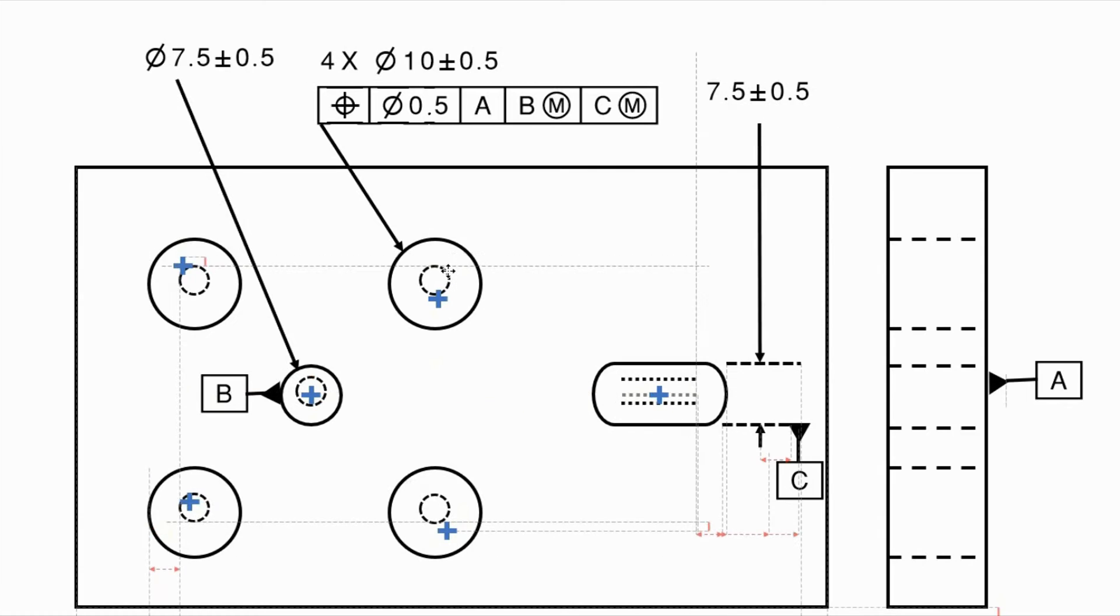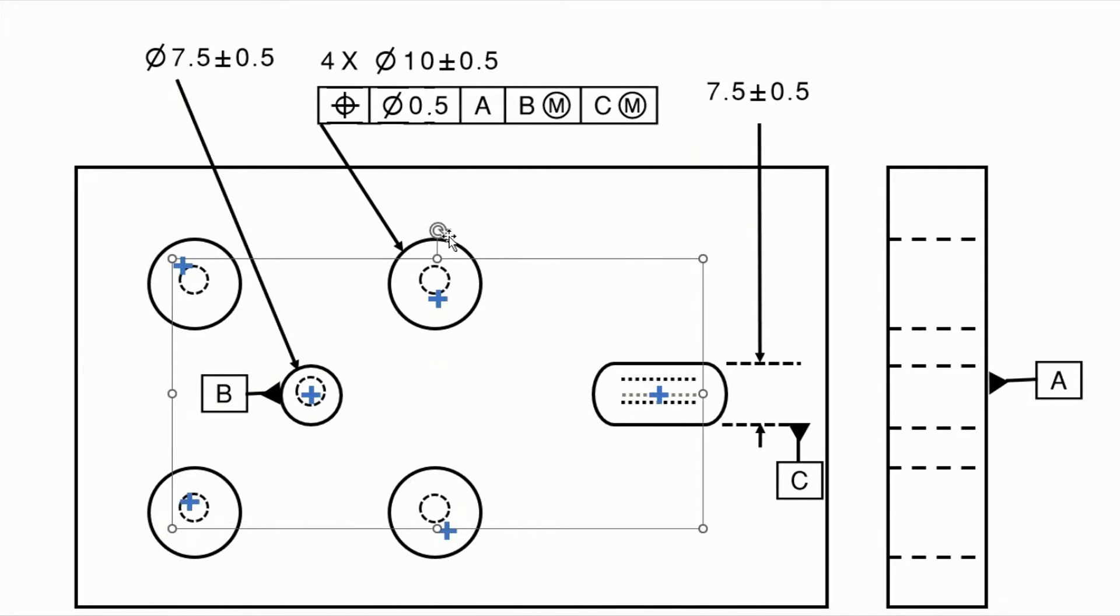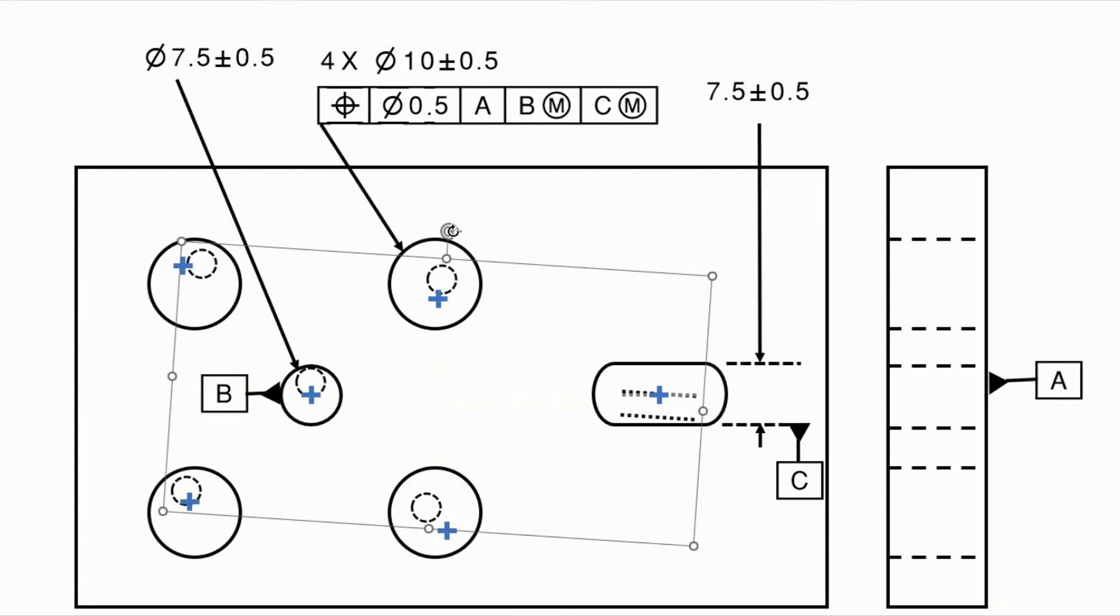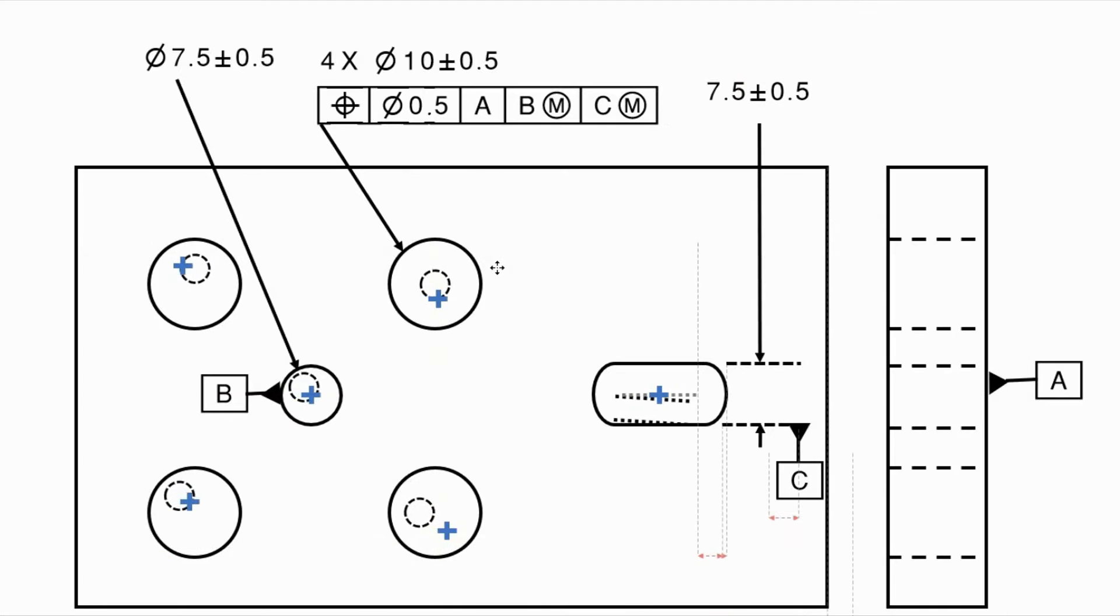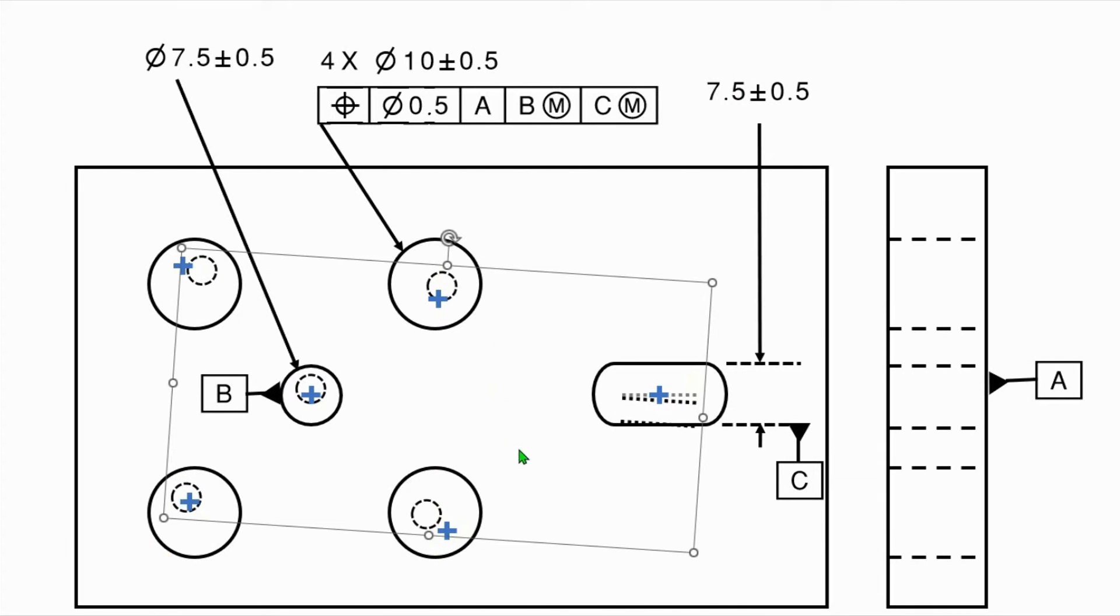Well, maybe if I rotate this, because I'm allowed to rotate it too, kind of rotate it like that. There we go. Now can I get everybody in? No, I cannot. So part number three fails because I can't simultaneously get everybody in tolerance.